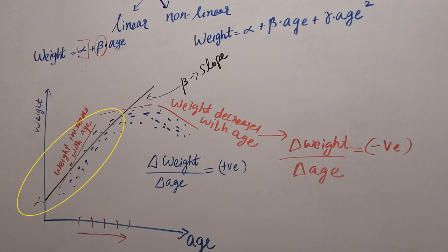In this range over there when we have a positive relationship between age and weight the slope is gradually going up.